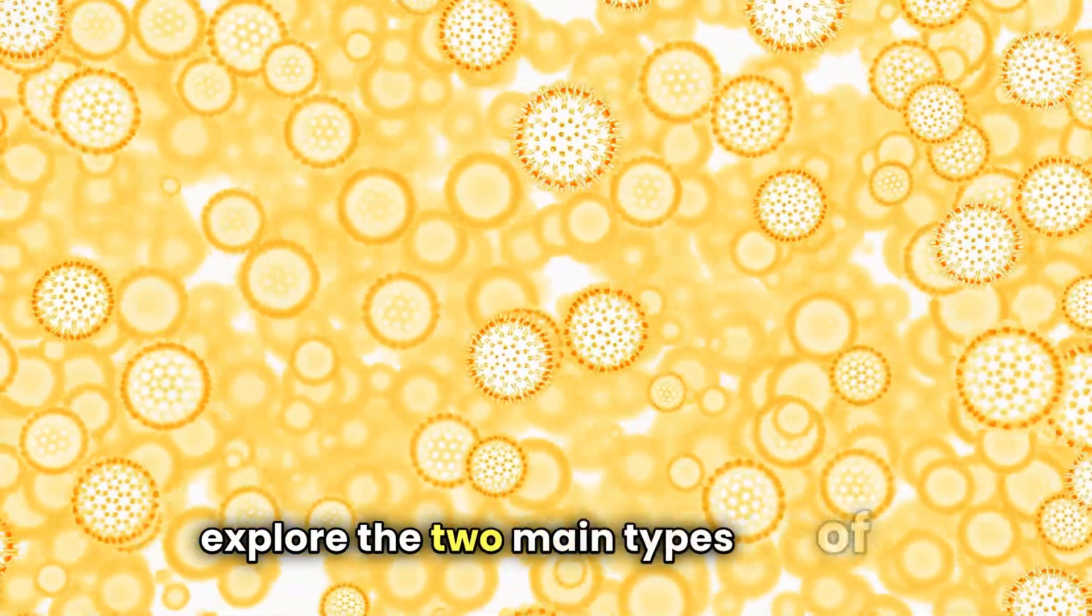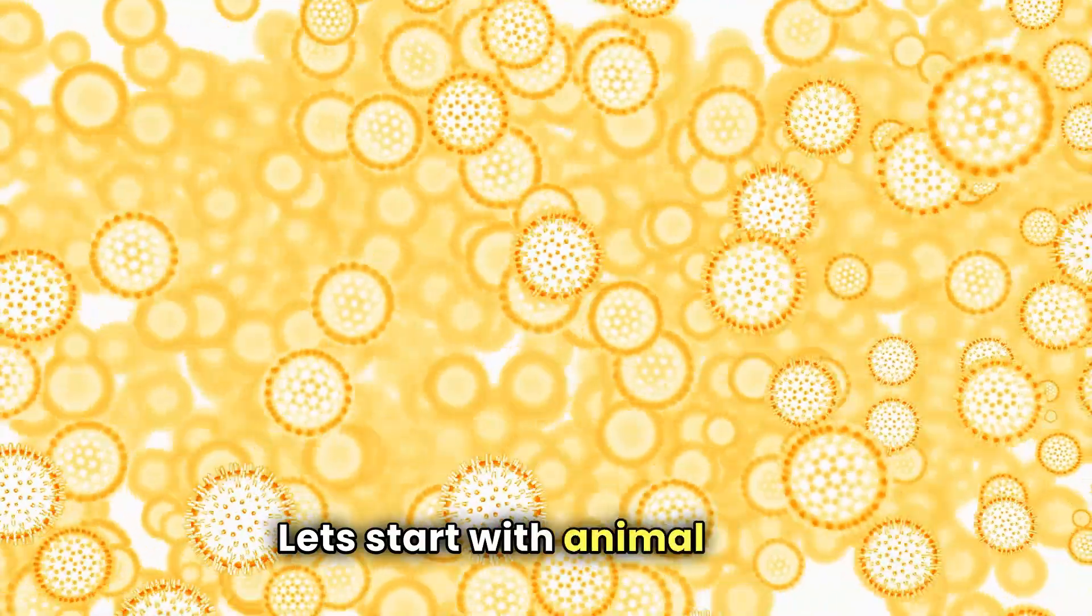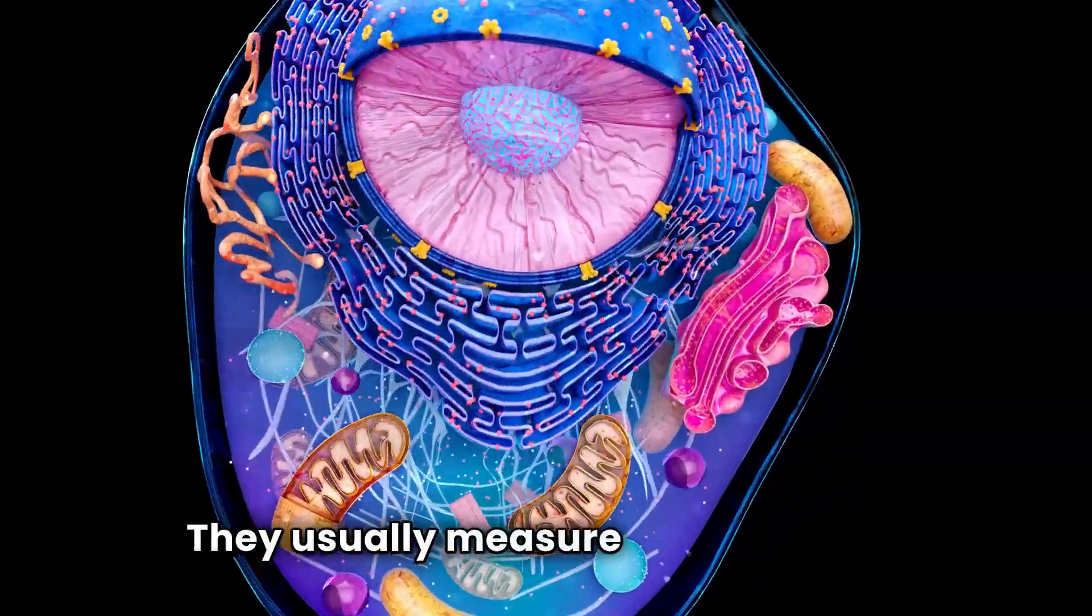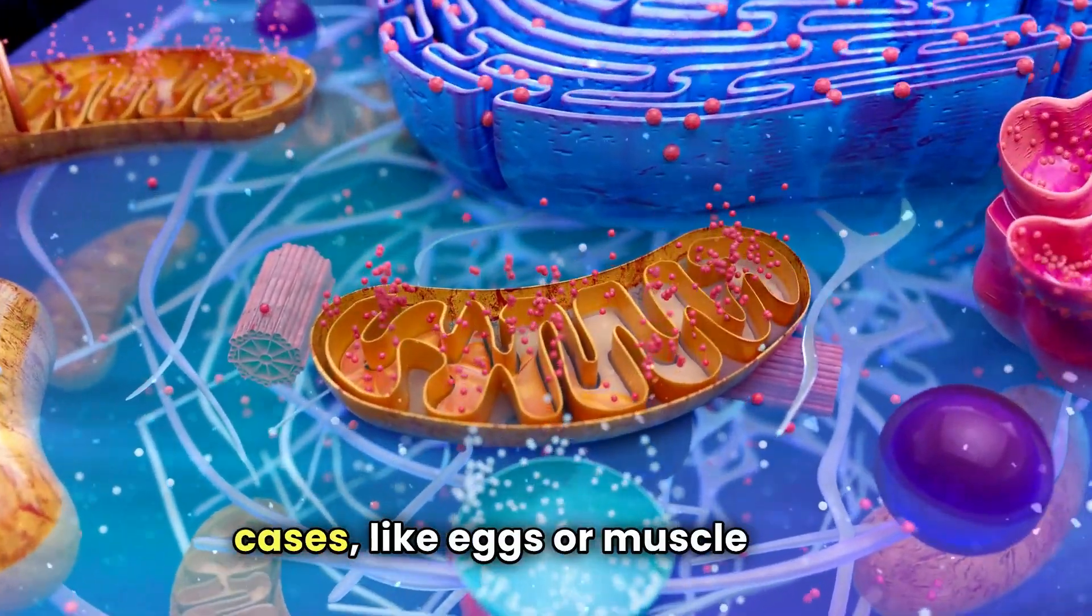Let's explore the two main types of cells, animal cells and plant cells. Let's start with animal cells. They usually measure around 10 micrometers, but can be larger in certain cases, like eggs or muscle cells.